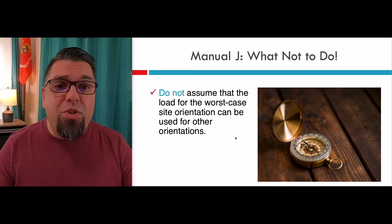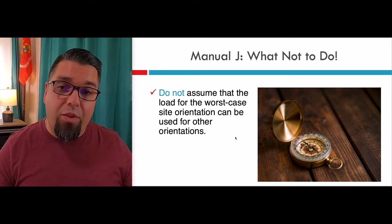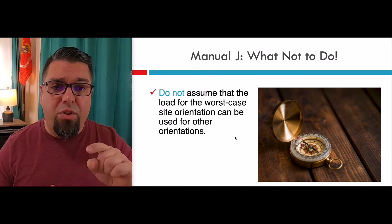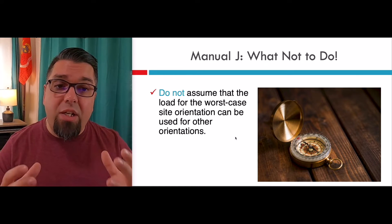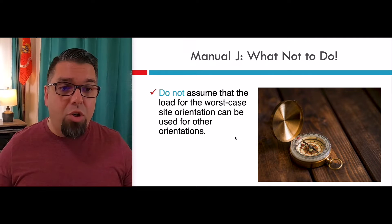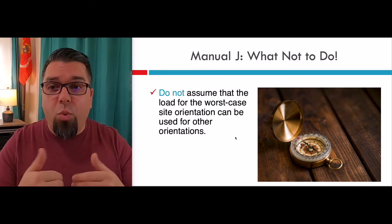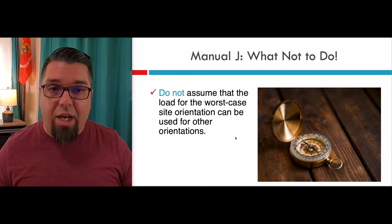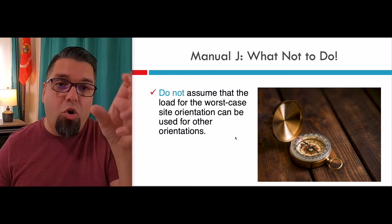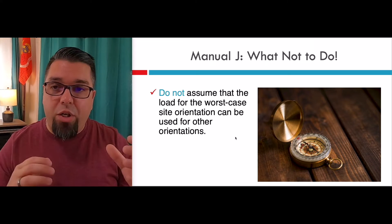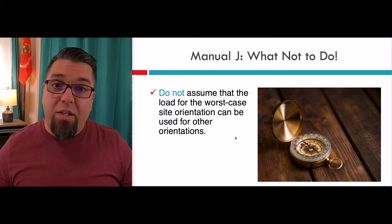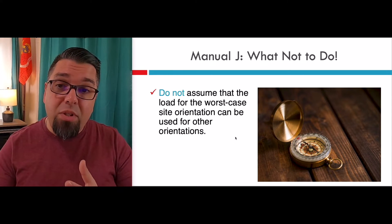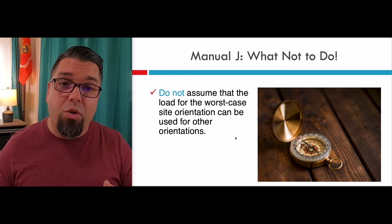Don't assume the load for the worst-case site orientation can be used for all homes. Put in the actual direction of north. If you didn't capture that on the site survey, just Google the address — Google Maps will show you the home's orientation, and you know where the front door is. If you're doing new construction on a cul-de-sac, the load will be different as you move the same style home around it, because windows and shading face different directions and the cooling gain changes. Heat loss would probably be the same, but cooling gain impacts the size of your air conditioner and possibly the furnace blower.